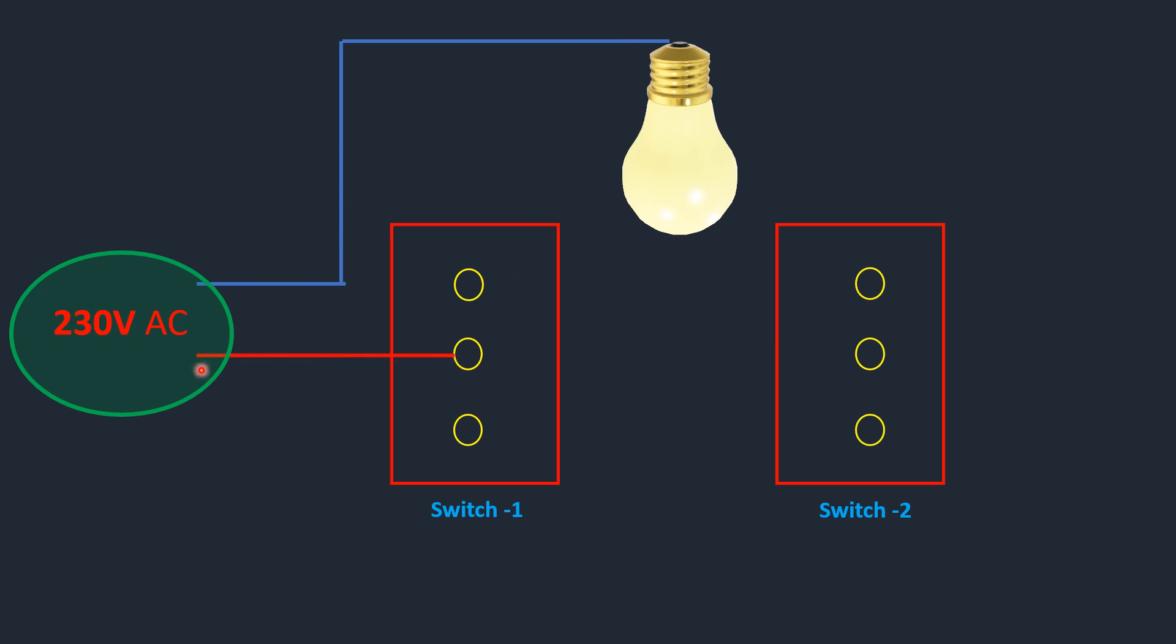Second, this is my phase wire. I connected it to the mid terminal. Then another mid terminal I connected to the light. Now you have two terminals left here and two terminals here. Let's connect this terminal with this one, and similarly this terminal with this one.